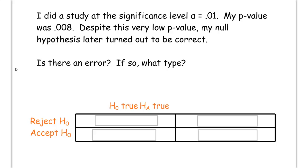Now, some practice. I did a study at significance level alpha is 0.01. My p-value is 0.008. Now, when p is below alpha, that means we reject it. So, we're thinking something where we rejected in this situation. Despite this very low p-value, my null hypothesis later turned out to be correct. So, we rejected, null hypothesis later turned out to be correct. Null turned out later to be true. That would mean that we made a type 1 error.